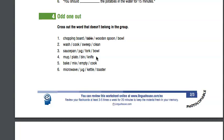Number five: bake, mix, empty, cook. Bake a cake, you mix the ingredients and then you cook - all of these are to do with cooking or baking. But 'empty' doesn't belong: we empty the dishwasher, empty the bin. We pour something out or take the bin out. So 'empty' is the odd one out.